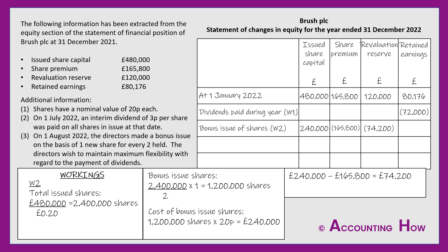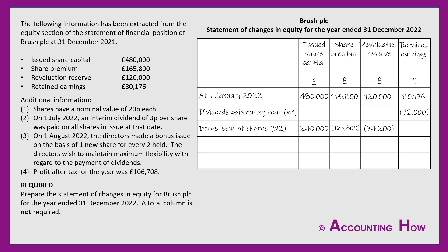The final item is the profit for the year: profit after tax of £106,708 goes straight into retained earnings. In another question it may be necessary to work out or subtract interest and tax. Finally, I total the columns to find the closing balances at 31st December 2022. The share premium has been completely wiped out, the revaluation reserve has reduced, and retained earnings close at £114,884.